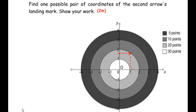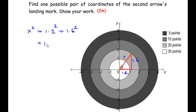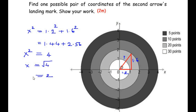Drawing a right-angle triangle, the x distance is 1.2 and the y distance is 1.6. Using Pythagoras: x² = 1.2² + 1.6² = 1.44 + 2.56 = 4, so x = √4 = 2. The length of this line from the origin to point P(1.2, 1.6) is 2.